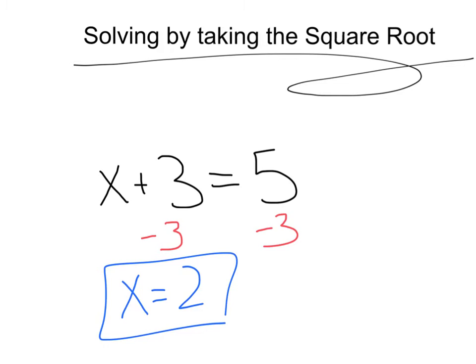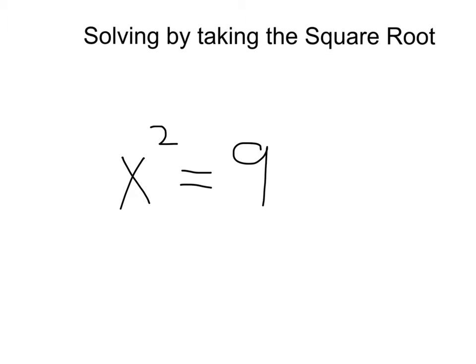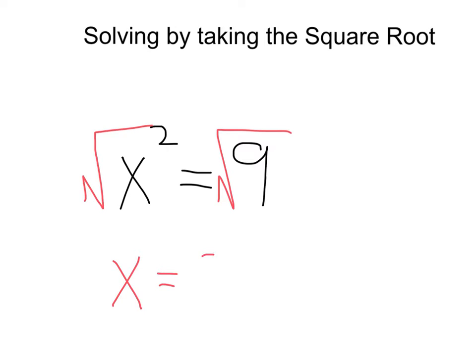We can use these same techniques by taking the square root. For example, if we had x squared equals 9, our opposite, or inverse, of x squared would be to take the square root of that x squared term. That's going to give us x by itself. Now since we did it to one side, we've got to keep it balanced — do it to the other side. Square root of 9 gives us x equals 3.